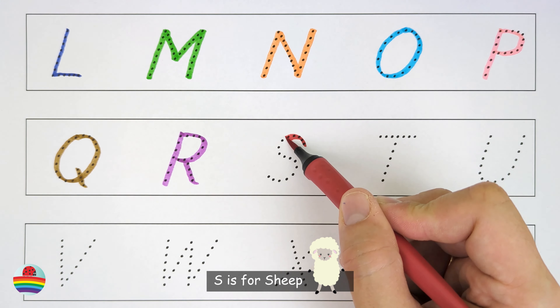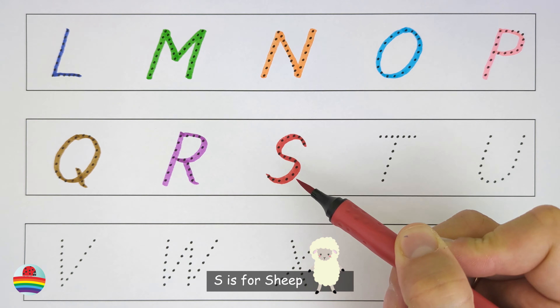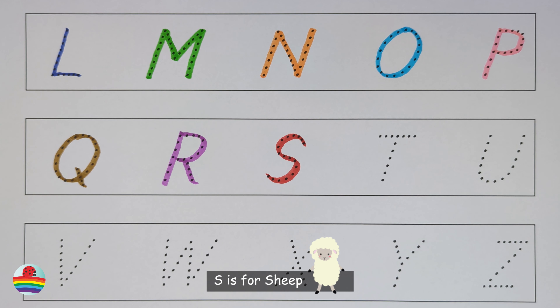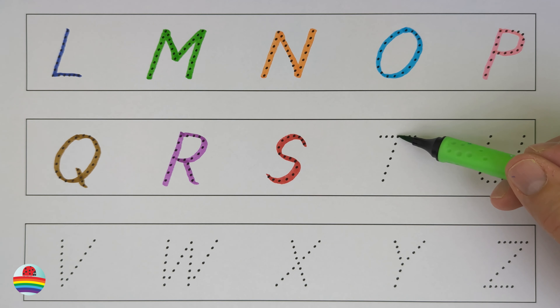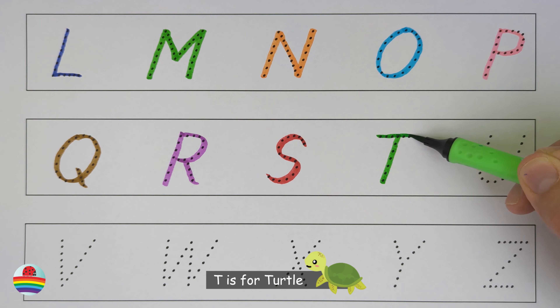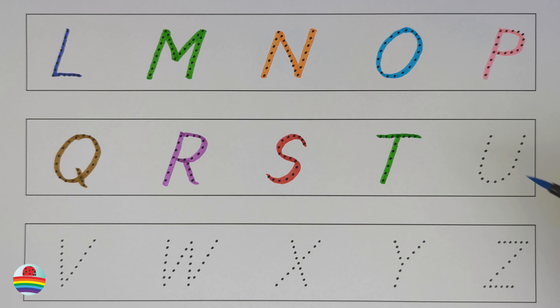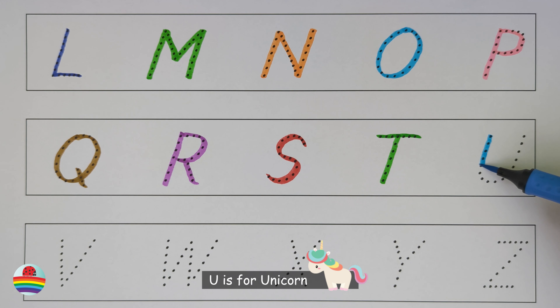S. S is for sheep. S. T. T is for turtle. T. U. U is for unicorn. U.